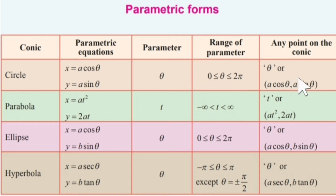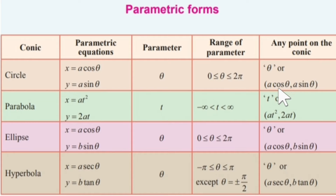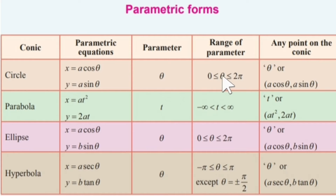The range of theta lies between 0 to 2 pi, closed interval including 0 and 2 pi. Any point on the circle is of the form a cos theta, a sin theta. So a cos theta represents the x coordinate of that point and a sin theta represents the y coordinate of that point. This is the parametric equation of the circle.